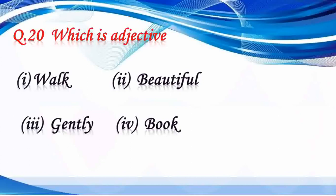Question number 20: which is the adjective? An adjective describes the quality and state of being of a noun. Here, beautiful is the quality of the noun. So our answer is beautiful. Worth and gently are other options — gently is an adverb, and book is a noun.